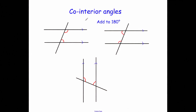Next, co-interior angles. The two angles inside the parallel lines on the same side of the transversal add up to 180 degrees. So if one is 100 degrees, the other has to be 80 degrees. This applies on both sides and even when the parallel lines are oriented differently. These are sometimes called C angles or U angles, but the proper name is co-interior angles and they add up to 180 degrees.